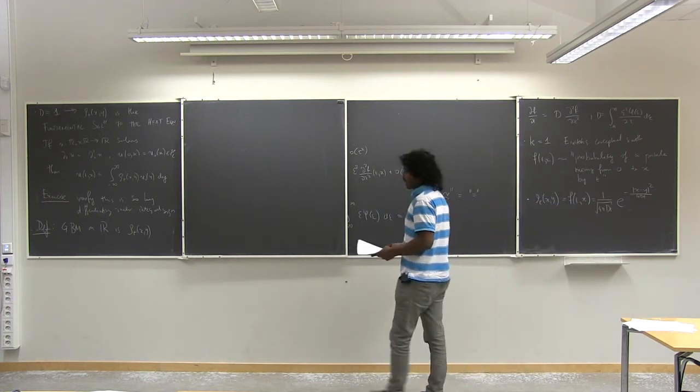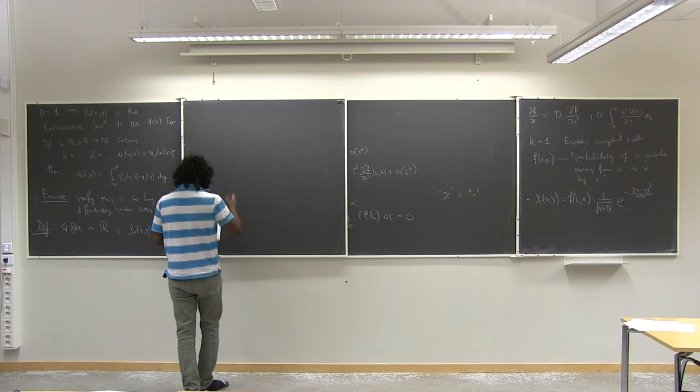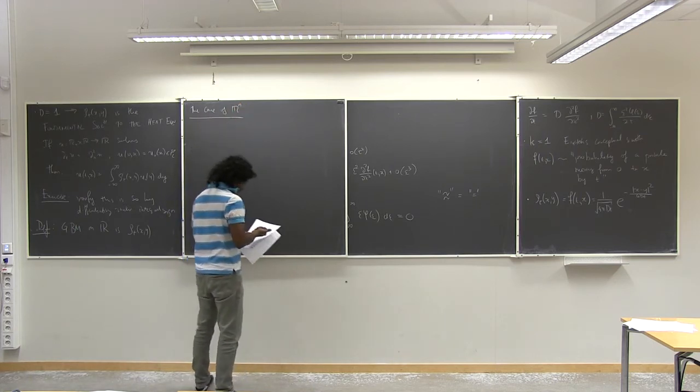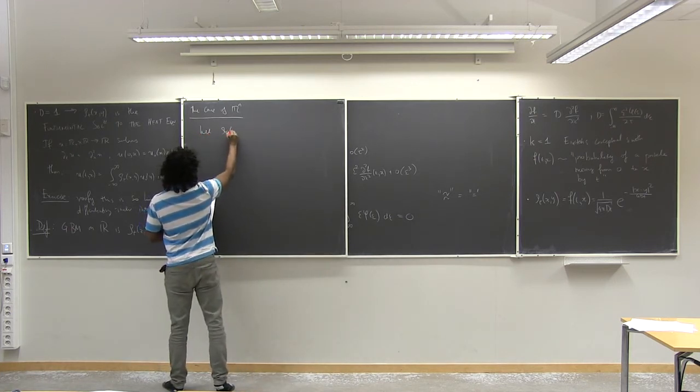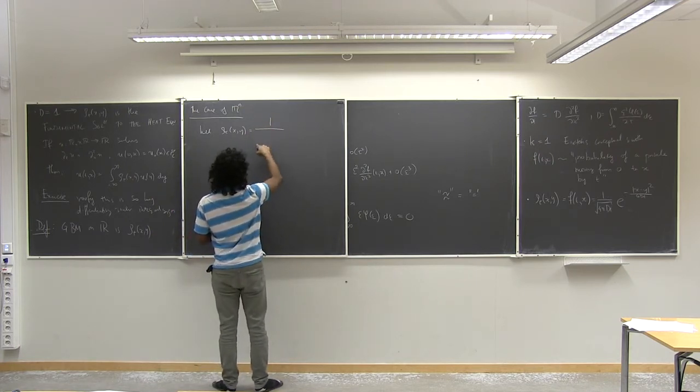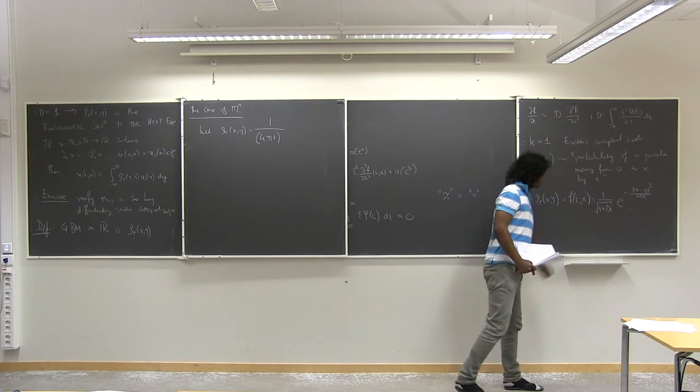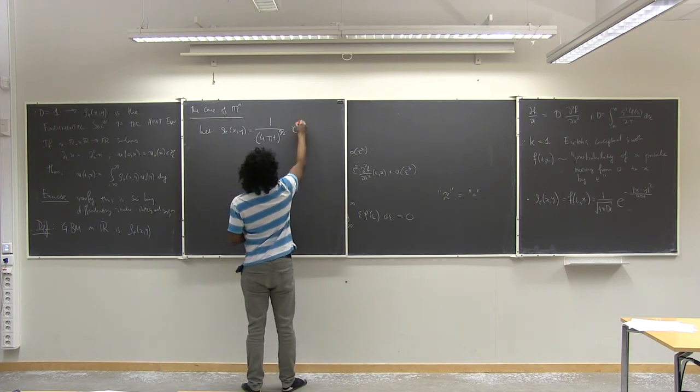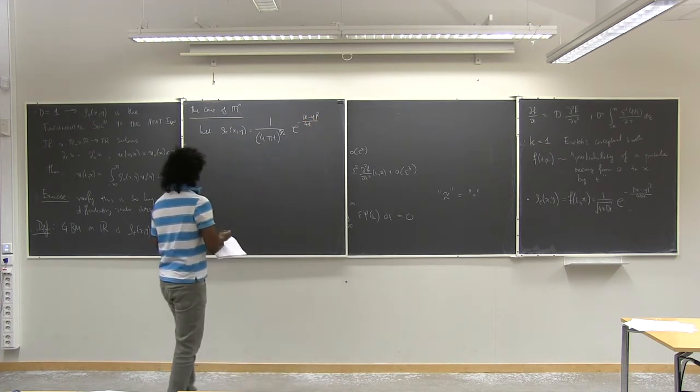My first exercise that I'll give is that verify this is so by differentiating under the integral sign. So, my definition now. So, my definition. So, the geometric Brownian motion on R is rho of t, x, y. So, that's because we've taken the diffusion coefficient equal to one, and because then we can identify this as a fundamental solution to the heat equation, and then I'm going to define it as this.